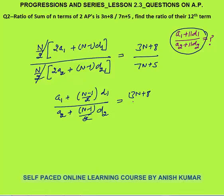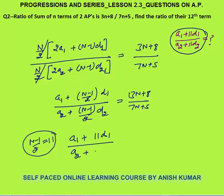Dividing both numerator and denominator by 2 keeps the fraction the same on the right-hand side. Our requirement is a1 plus 11d1 over a2 plus 11d2. So what should I put for n minus 1 by 2 so that it becomes 11? If n minus 1 by 2 equals 11, I get my requirement: a1 plus 11d1 over a2 plus 11d2.